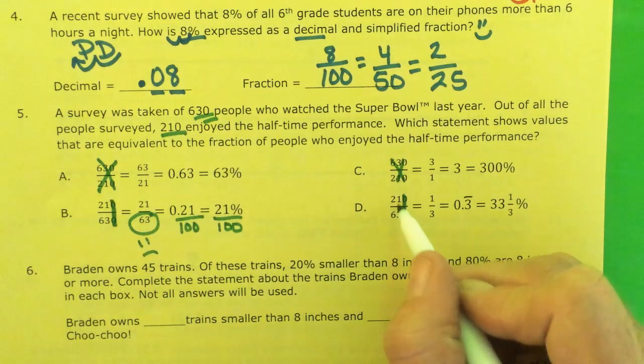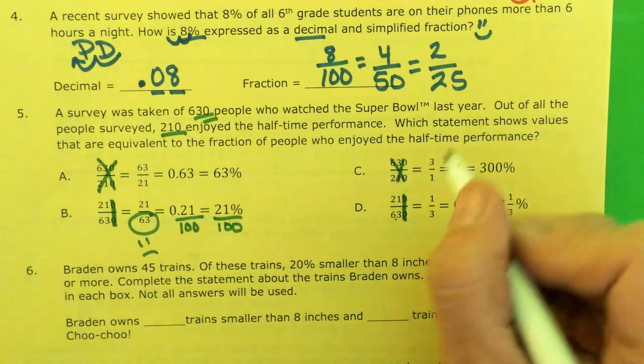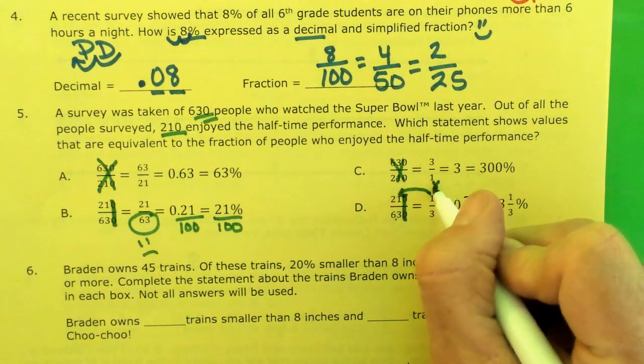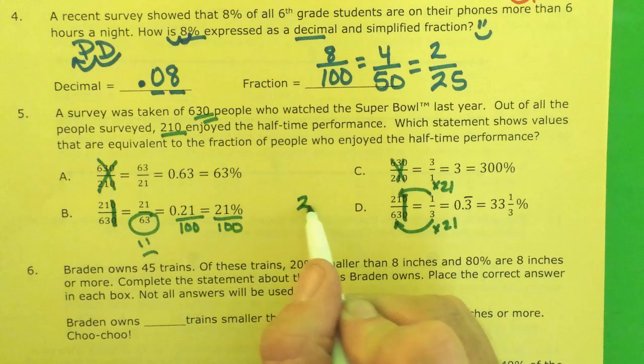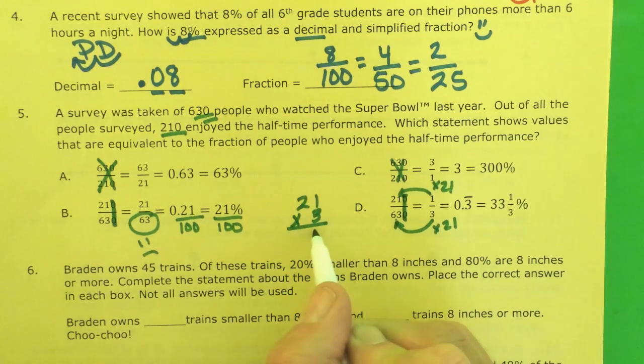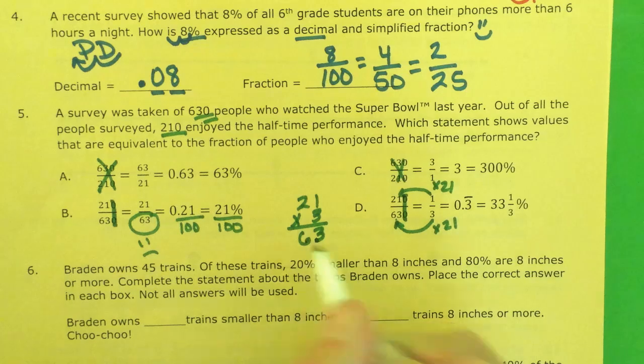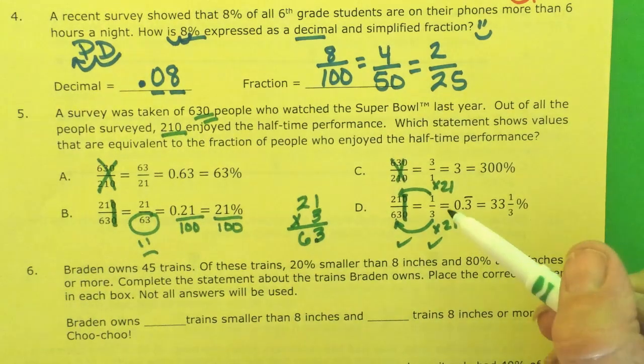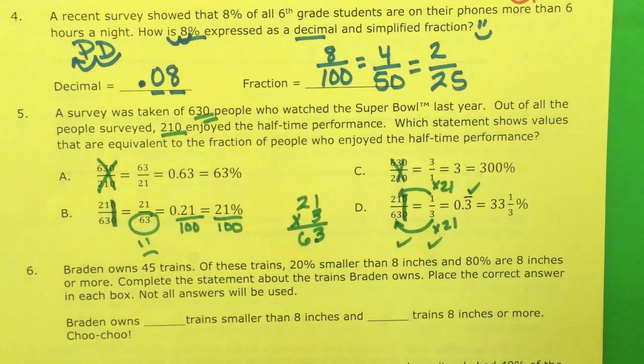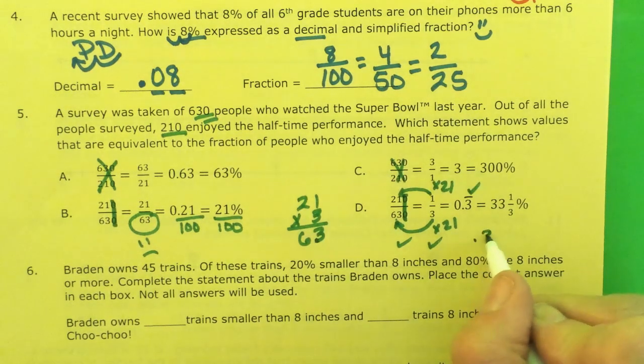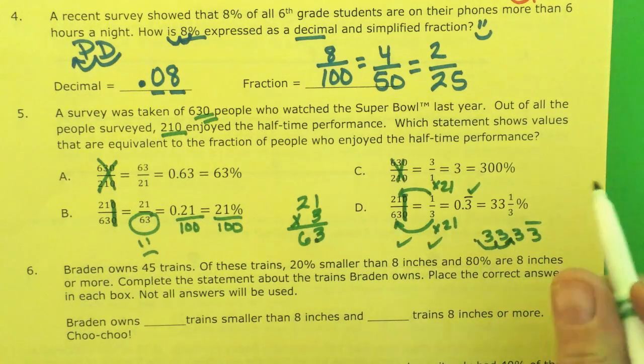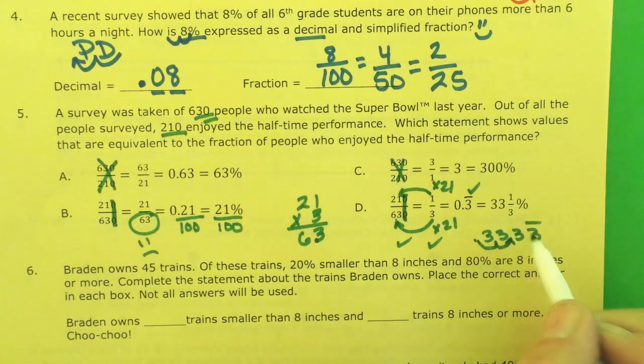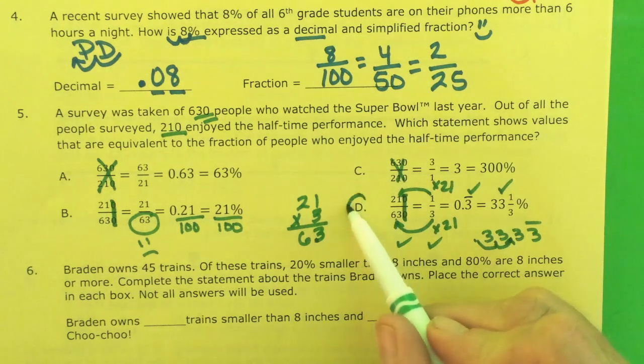Let's check D. 21 and 63 and 1 and 3. Now how does 1 get to 21? Times 21. And is 3 times 21, 63? 21 times 3. 1 times 3 is 3. 2 times 3 is 6. So yes, these two match. Now, does 1 third match 0.3 with a forever hat? Yes, it does. And then if I take 0.3333 with a forever hat, and I doctepepper it, changing that decimal to a percent, I get 33.3 forever hat, which is the same thing as 33 and 1 third percent.